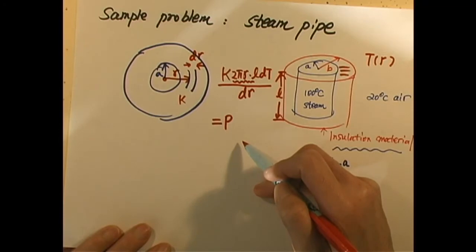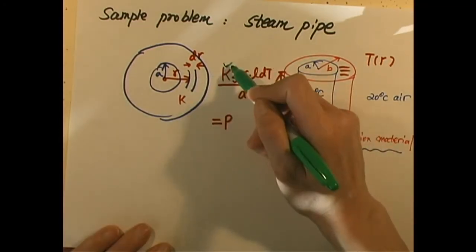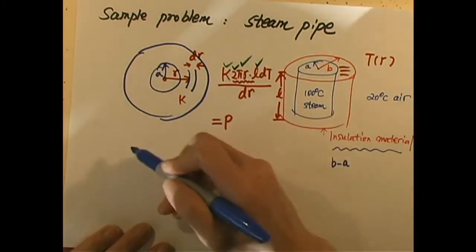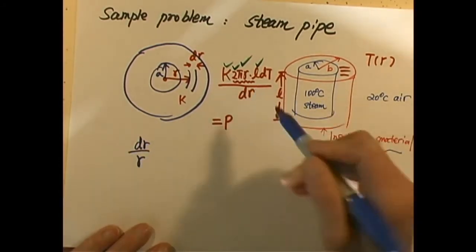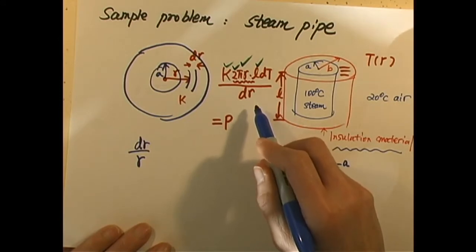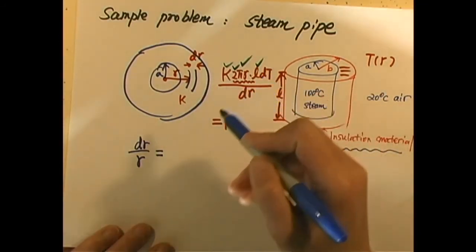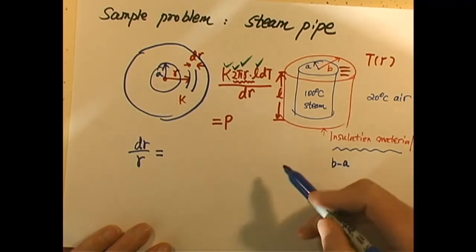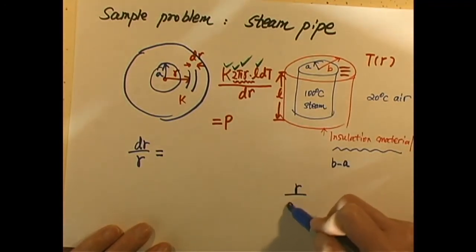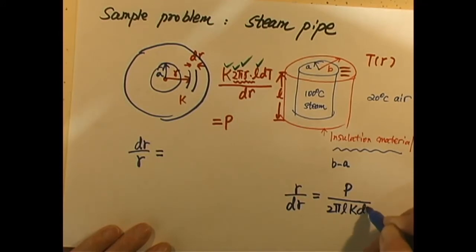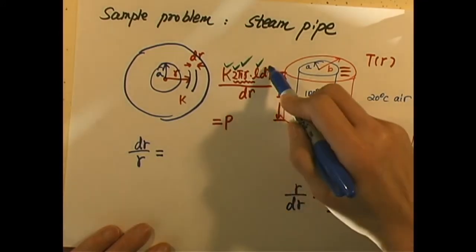In this case, we're going to rearrange everything. Now if you look at this, constants everywhere. So if we reverse this, we have dR over R. How do we get that? Reciprocal. We have dR over R on one side. The other side, if we mathematically do this, we throw the constants 2π, L, K, and also dT to the other side.